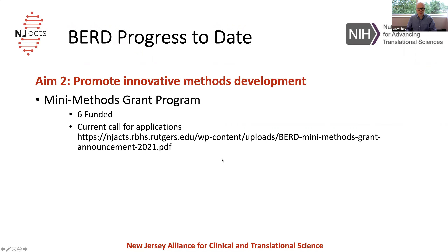In terms of AIM-2, we have a mini methods grant program aimed at funding methods development. There's an ongoing call for proposals — the link is listed here and you can also find it through the NJACS website. We're looking for essentially pilot work for novel study design or data analysis methods. Through NJACS, we want to improve how people do clinical and translational research. If you have ideas about improving study designs, statistical modeling, ways of measurement, reducing bias, or anything like that, we're interested in seeing your application and potentially funding it.